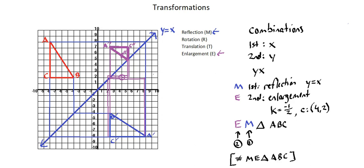In all of our lessons so far, we've started with a description and moved to the transformation. In our next lesson, we're going to look at the scenario in which we're given the object and the image, and we need to describe the transformation that was performed.